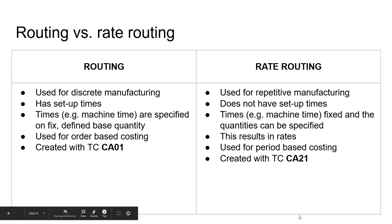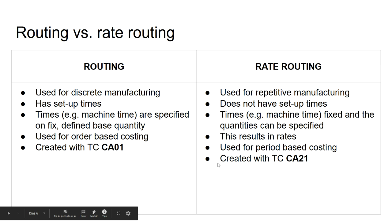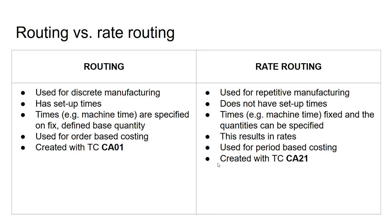Rate routings are used in repetitive manufacturing, whereas standard routings are used in discrete manufacturing. In a routing there are setup times, whereas in a rate routing there are no setup times. In a routing, times are specified based on a defined base quantity — for example machine time — and this is why routings are used for order-based costing. Standard routings can be created with transaction code CA01.